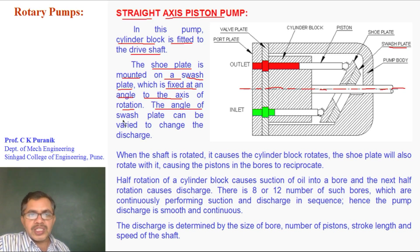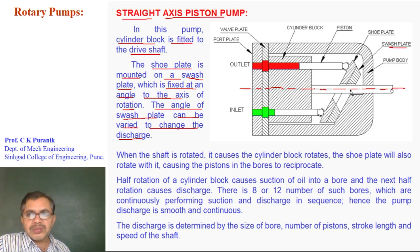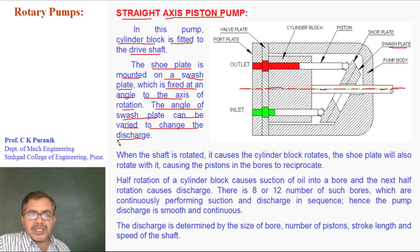The angle of the swash plate can be varied in order to change the discharge. There is a mechanism to change the angle of the swash plate, though that mechanism is not shown in this figure. By changing this angle of the swash plate, we can change the rate of flow of oil — that is, the discharge of the pump.